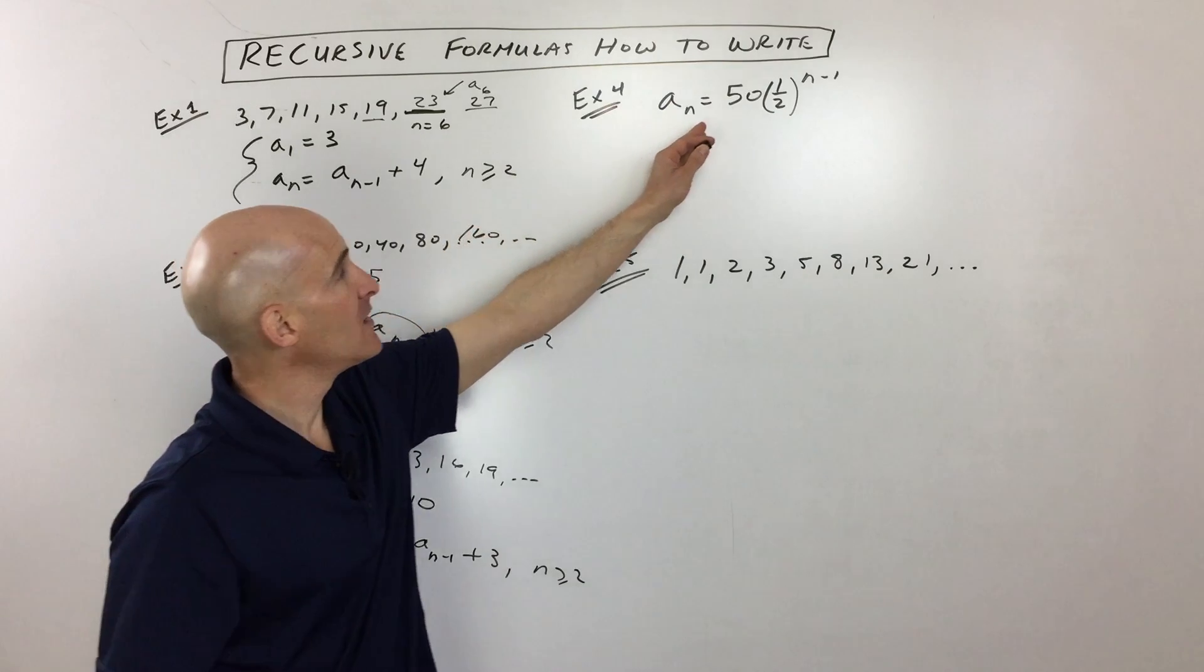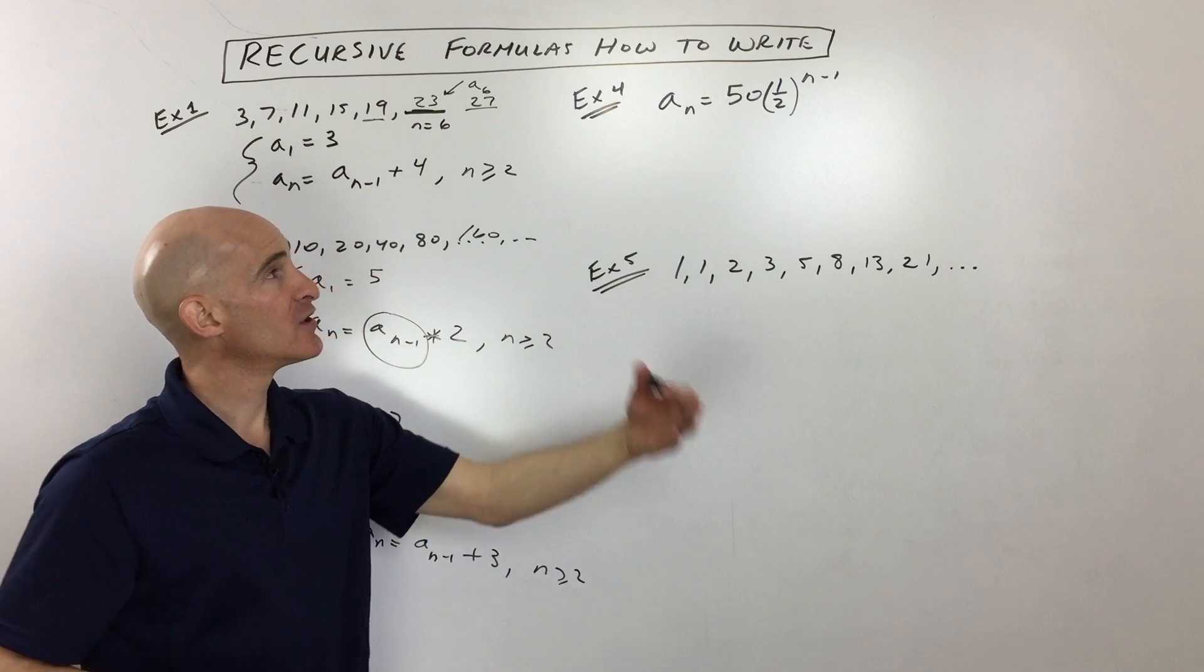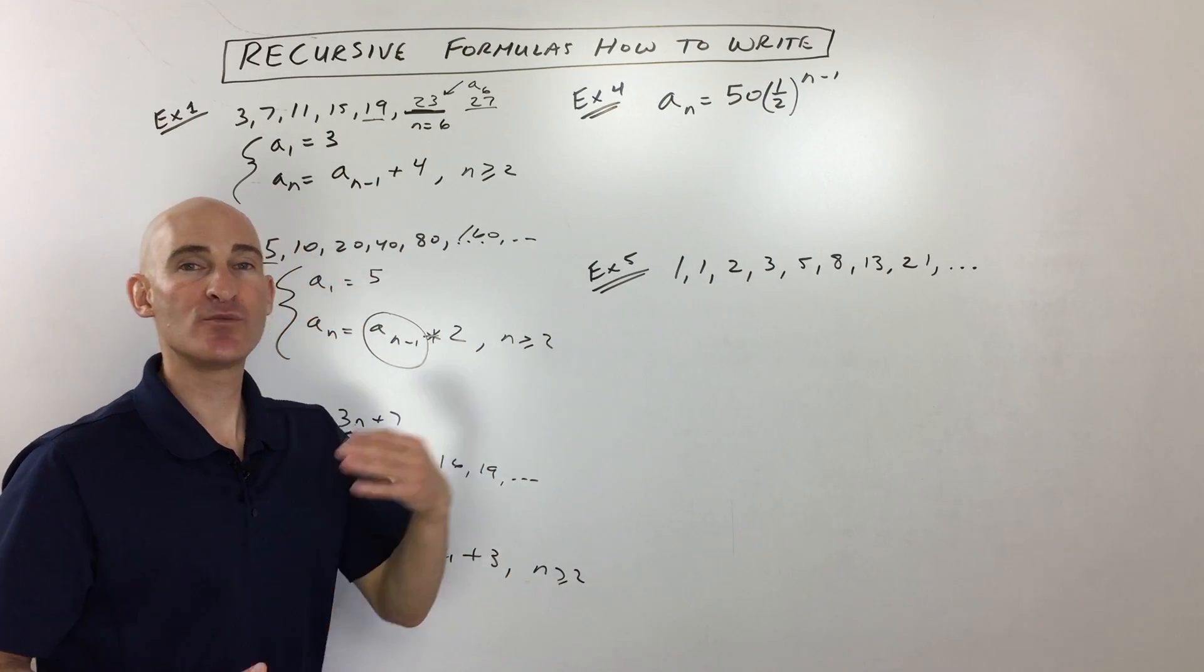So that's that one. Now, for example 4, this formula also is an explicit formula, and it takes you right to whatever term you want. So if you want 100, you put in 100.